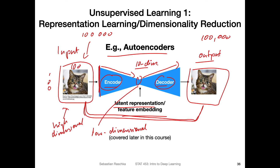Why would we be interested in that? The interesting part is this latent representation — you can think of it as a compressed version of your data. The decoder is able to reconstruct the original image from this small-dimensional representation, which means that dimensionality is sufficient to encode important information about the data. So it's a form of dimensionality reduction. There's actually a close relationship between an autoencoder and PCA if the autoencoder uses linear activations, but we'll cover autoencoders in more detail in part five.